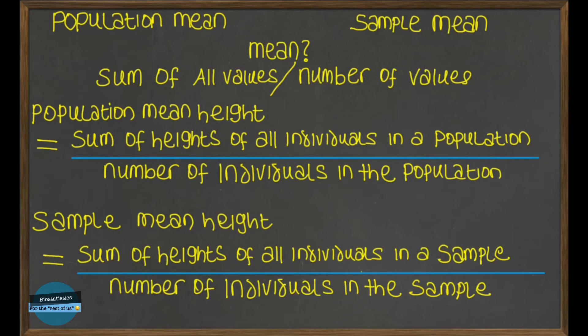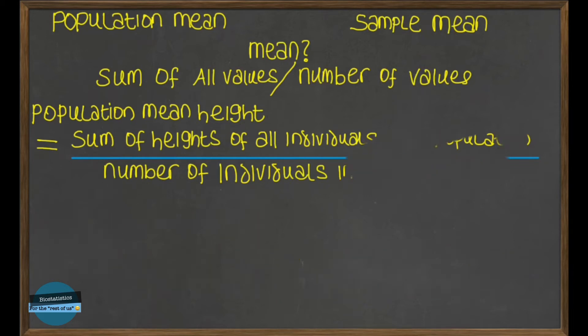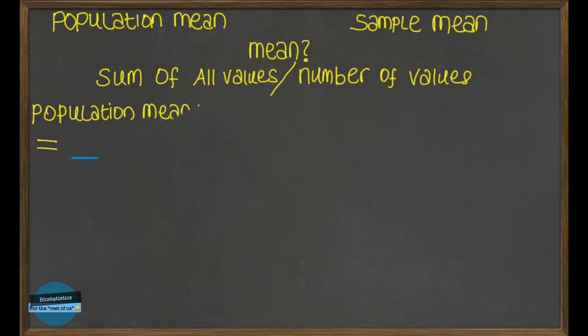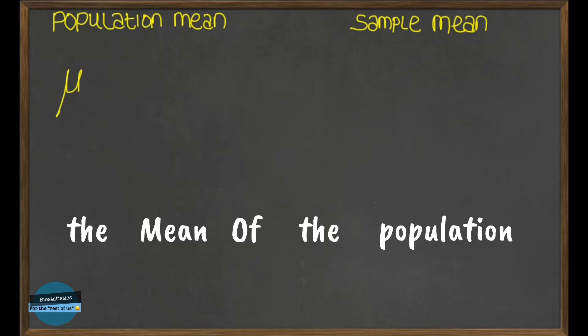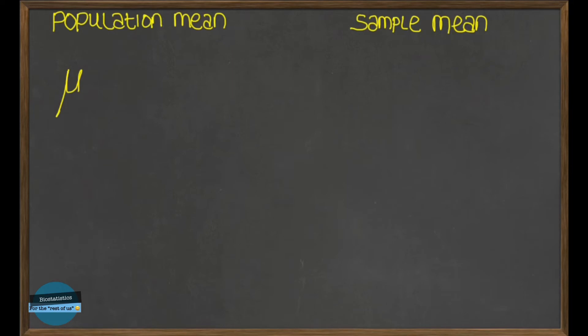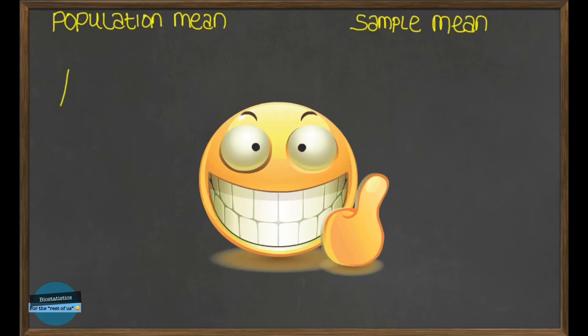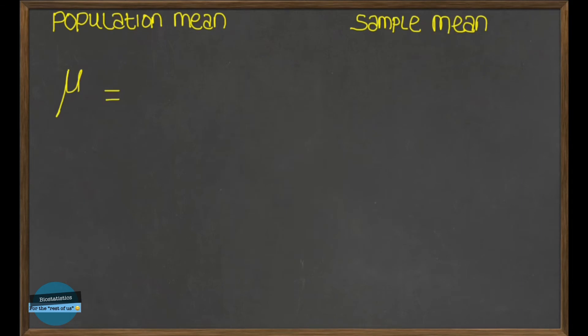Let's start with the population mean formula. The mean of the population is represented by the Greek letter mu. So instead of writing out the mean of the population, once you write the letter mu, everyone in the whole world knows and understands that this is what you mean. Okay, pun intended. So we say mu is equal to sigma x. So sigma here means the sum of, so this just means the sum of all the values of x.